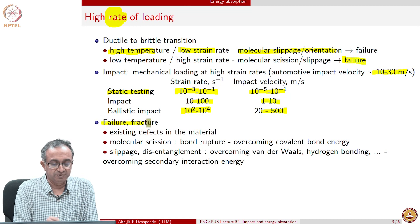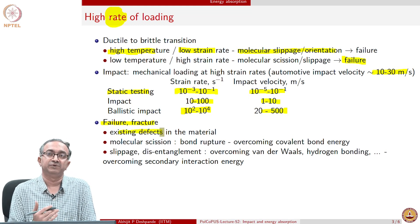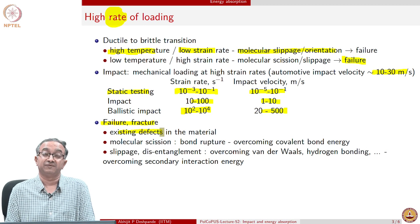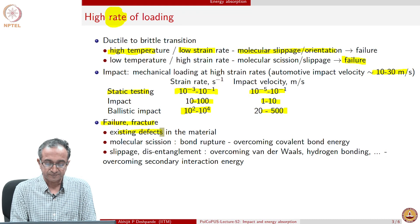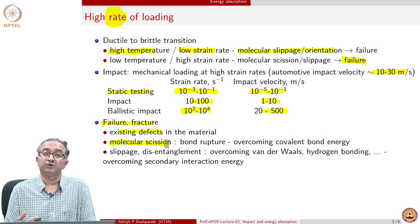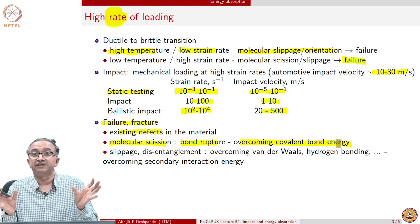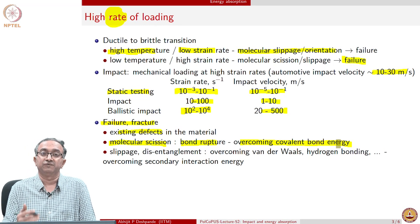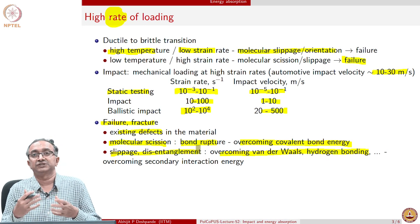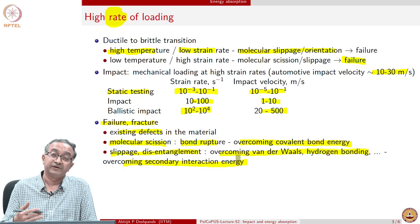Failure in a material is because of existing defects already there — there will be voids, there may be micro cracks from processing, and because of aging effects, certain defects may have accumulated. When the process of failure and fracture starts in macromolecules, macromolecules have to start breaking. Bond rupture, or overcoming the covalent bond energy between different monomers, is a key phenomenon for fracture to take place. Overcoming secondary interactions is also important — both are involved in failure.